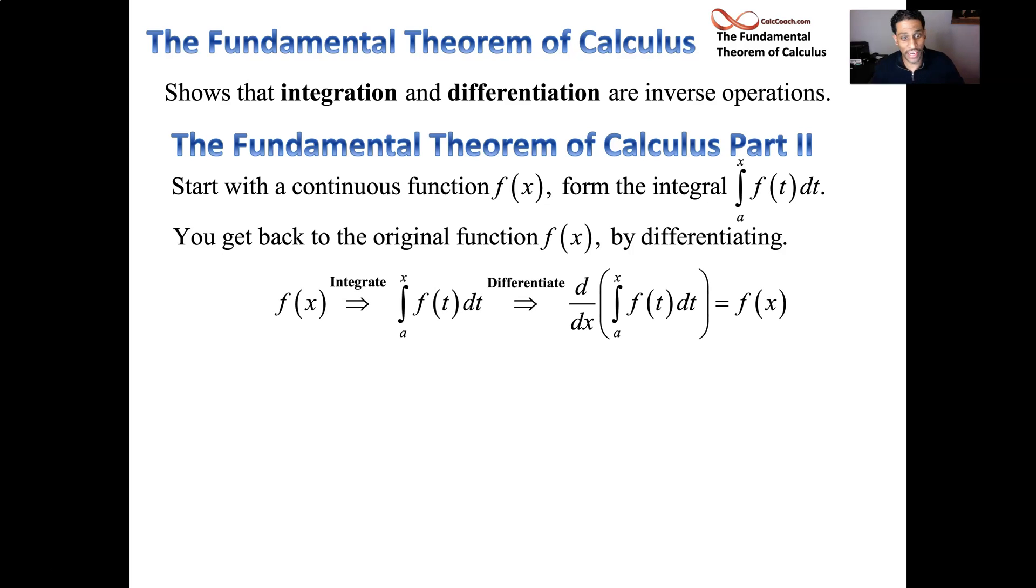So you start with f of x, you integrate, you get the integral from a to x of f of t dt. And then you follow it up with the derivative of that, and their inverse operations, the derivative of the integral, back to the original function.